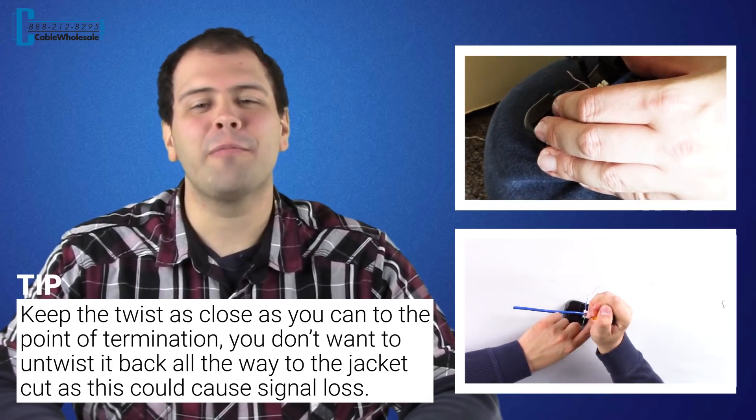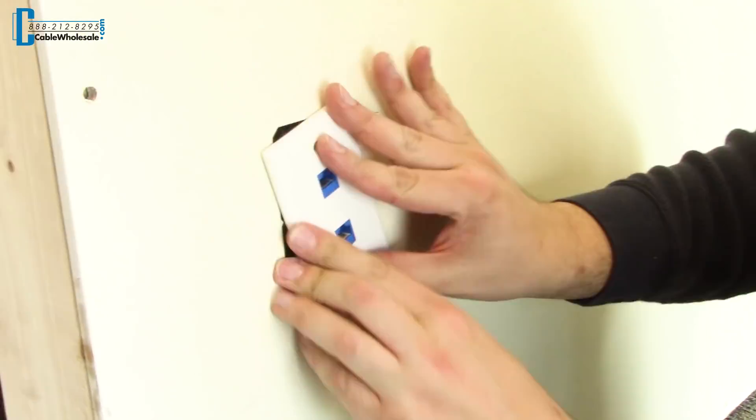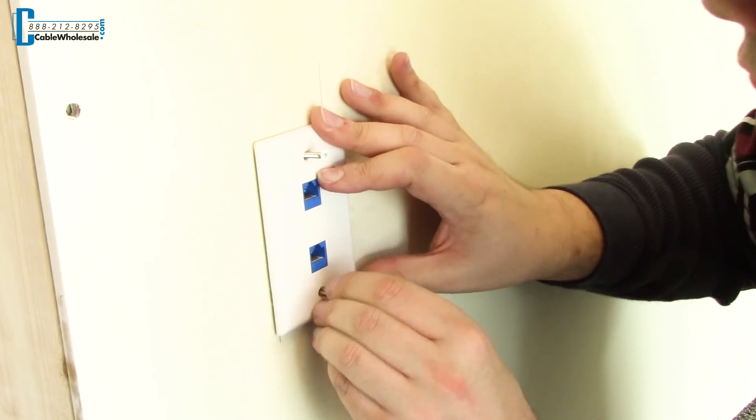Now, using the punch down tool, punch down your keystone. Place the keystones into the faceplate. Now, secure the faceplate and there you have it.